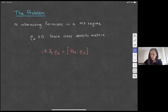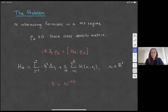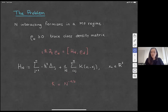What is this Hamiltonian? It is made of two parts: the kinetic and the potential part. For the kinetic part, we have the sum of the kinetic energy of each single fermion times the Planck constant squared. And the potential part is 1 over N, typical of a mean field regime, times the sum of all the interactions among couples of fermions. For this talk, I will restrict the dimension of the space to be equal to three.